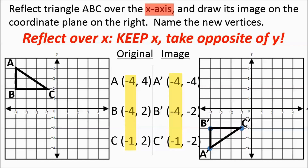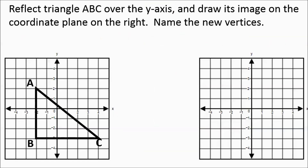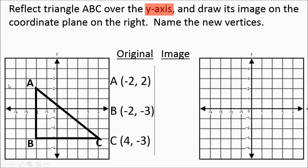We're going to do a couple more examples. We have triangle ABC and we're going to reflect it over the y-axis and draw its new image. This one gets a little more challenging because some of the points are to the left of the y-axis and some are to the right, so we need to keep track of things more carefully. Point A is at negative 2, 2. B is at negative 2, negative 3. Point C is at 4, negative 3. We're going to highlight the y-axis because we are referencing our points in relationship to it.